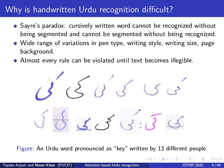In addition, handwritten text can employ a wide variety of pen types, writing styles, sizes, and page backgrounds. But most importantly, in handwritten Urdu, almost every rule can be violated until the text becomes illegible.